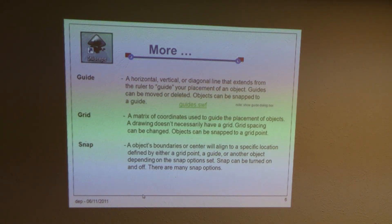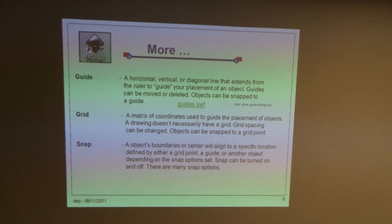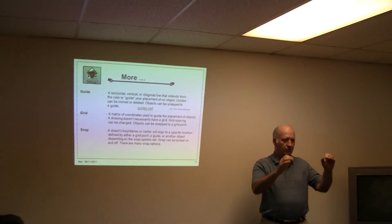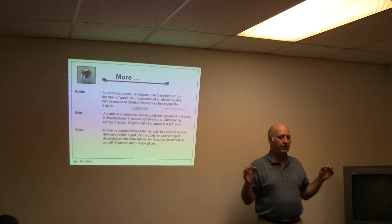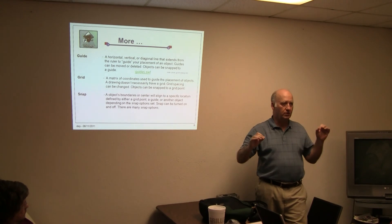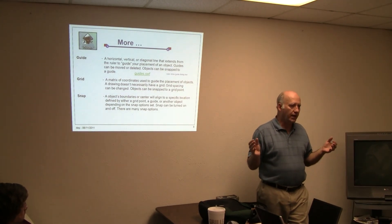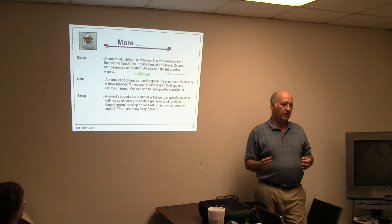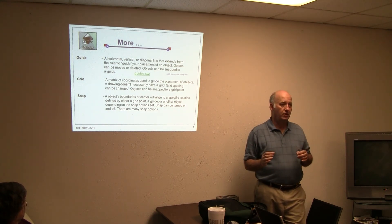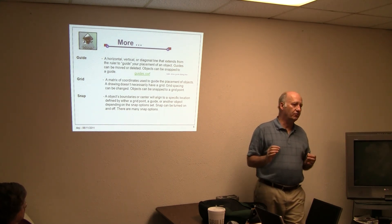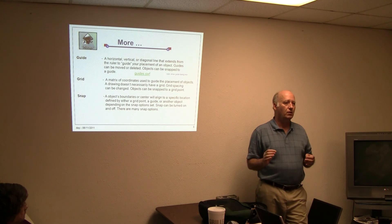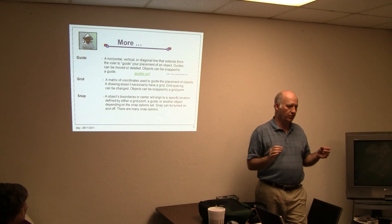A grid is just what it looks like. It's a series of points in a matrix — x, y coordinates — spaced equally, typically, but they don't have to be equally spaced. And those can be used to snap to. If you do that, generally you only allow yourself to snap to places that are on the grid.